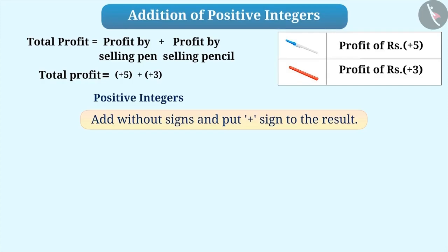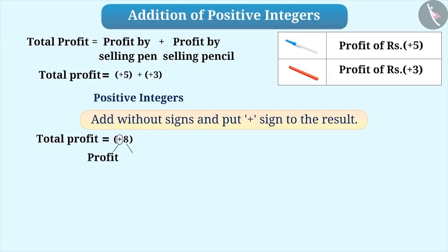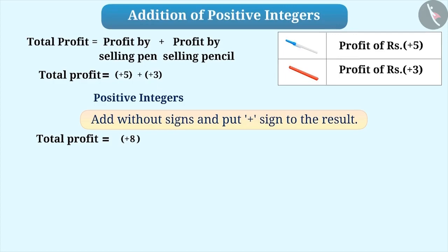Using this method, addition of plus 5 and plus 3 without signs will result in 8. Then we get the total profit by prefixing the result with a plus sign, that is plus 8. Here, the plus sign represents profit and the number represents the value of profit. Therefore, we can say that the shopkeeper got a profit of Rs.8.